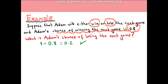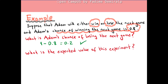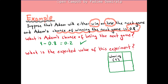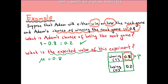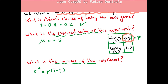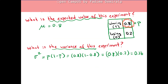The next question: what is the expected value of this experiment? We have a Bernoulli random variable with outcomes winning (1) and losing (0). The probability of winning is 0.8 and losing is 0.2. The expected value equals the success probability, which is 0.8. For the variance, using p times 1 minus p: 0.8 times 1 minus 0.8 equals 0.16. And the standard deviation is the square root of the variance, which is 0.4.